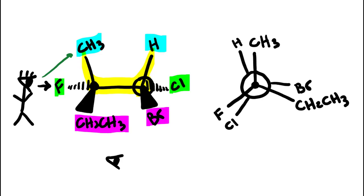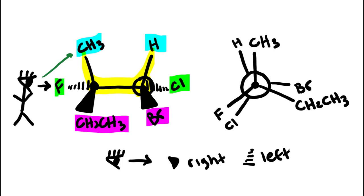If you're struggling to visualize, remember you can use that shortcut. Cyclops man is looking to the right, so wedges are going to be to the right and dashes to the left. The ethyl and the bromine are on wedges, so we expect them on the bottom right — and they are. The fluorine and the chlorine are both on dashes, going down to the left, which is exactly what we expect.